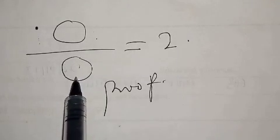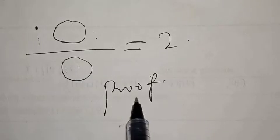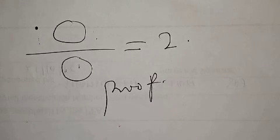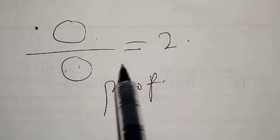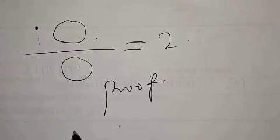0 divided by 0 is equal to 2. Proof. Hi everyone, welcome to my class. In this class we want to prove that 0 divided by 0 is equal to 2 from this fun mathematics.